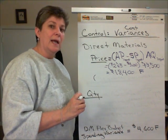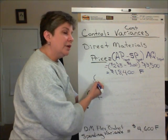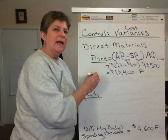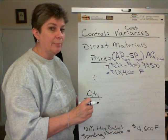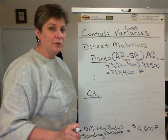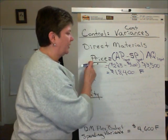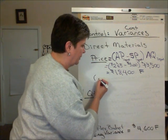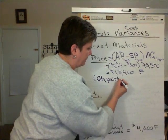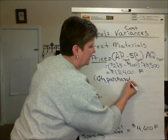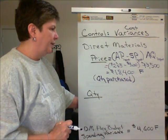Because purchasing, not production, is responsible for this variance, the variance should be isolated at the point of purchase. Usually the quantity purchased and the quantity used are not the same. So when you've got a difference, you should calculate the price variance based on the quantity purchased — the quantity of raw materials purchased should be used to calculate the price variance.